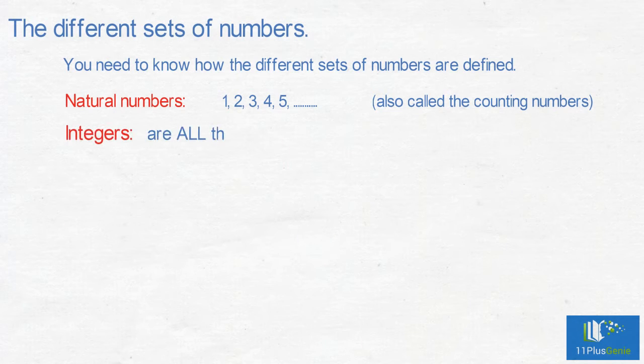Integers are all the whole numbers: minus 2, minus 1, 0, 1, 2, and so on.